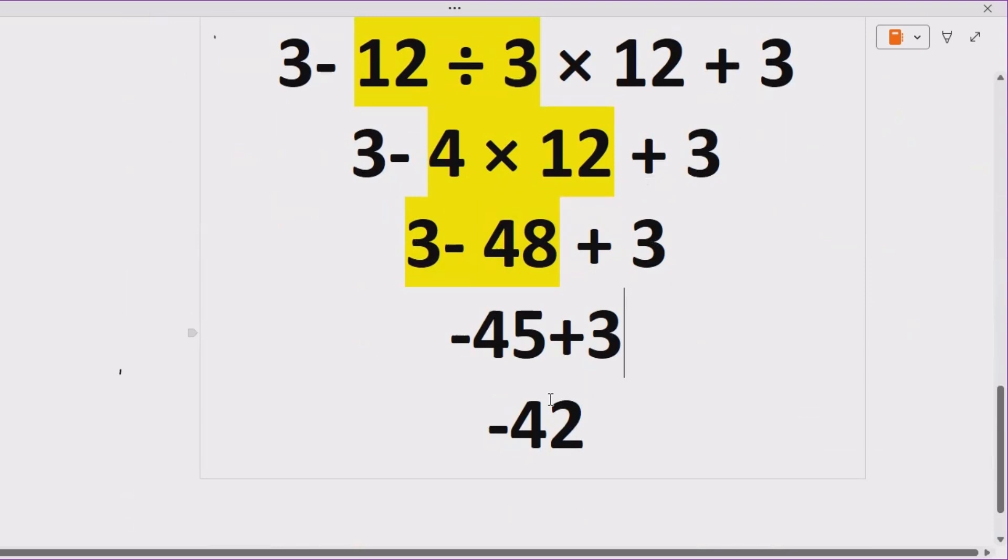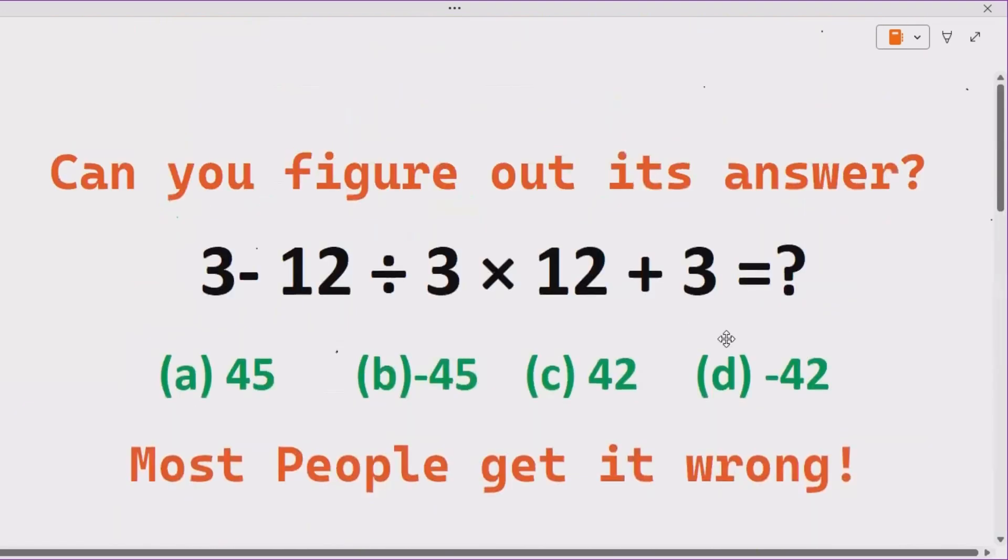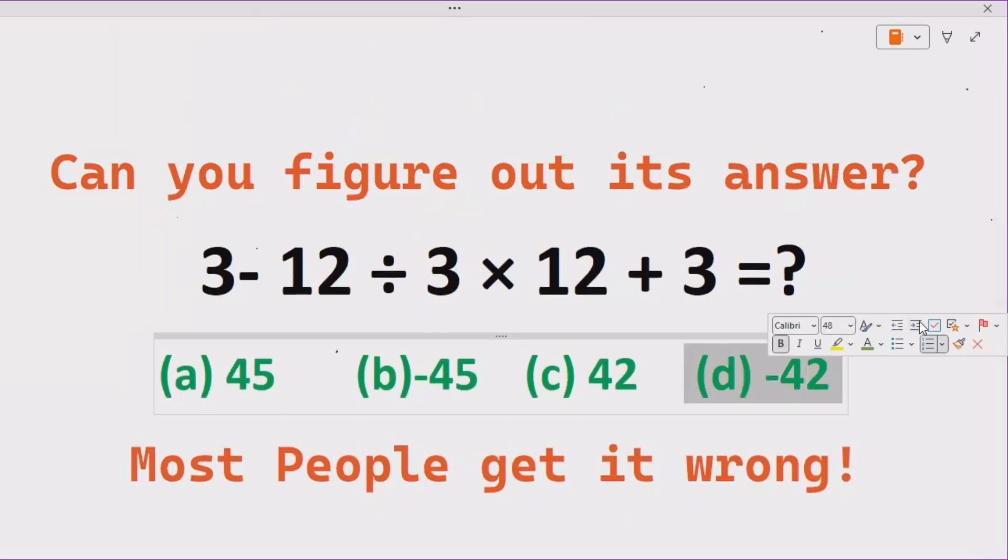Now 3 minus 48 gives us minus 45 with plus 3, minus 42, which is actually the part D of our expression. I hope